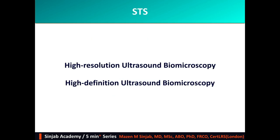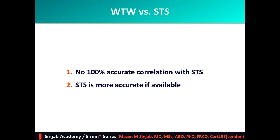The better method of sizing the phakic IOL is to measure sulcus to sulcus. This can be achieved by using high-resolution or high-definition ultrasound biomicroscopy. There is no 100 percent accurate correlation between white-to-white and sulcus-to-sulcus measurements. In addition, sulcus-to-sulcus is more accurate when available.